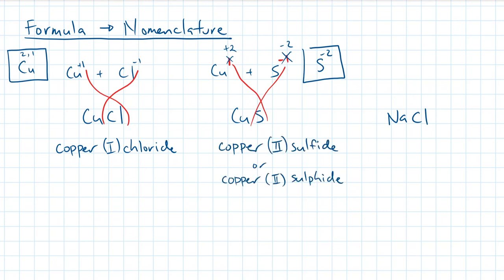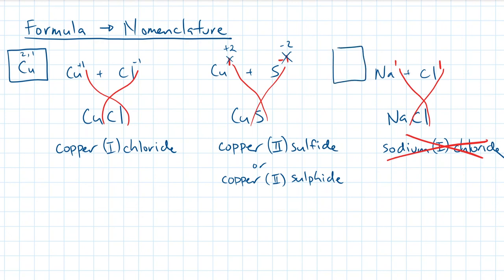Last example. Before sodium bonded with chlorine, they both had a charge of 1. It's probably tempting to write down sodium 1 chloride, but unfortunately, that's not the correct answer. Remember, all alkali metals have a charge of plus 1, so it's not necessary to include the roman numeral 1. The final answer is just sodium chloride.